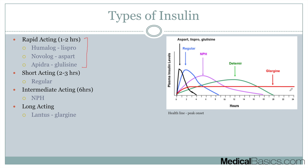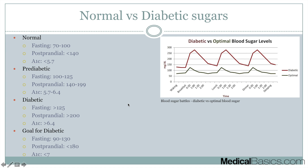Long-acting insulin is used for basal insulin, while short-acting insulin is used during meals. It essentially comes down to how long these insulins stick around. For short-acting mealtime insulin, we want something that's fast on and fast off. For long-acting basal insulin, we want something that sticks around for a long period of time.